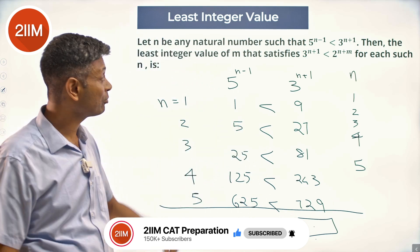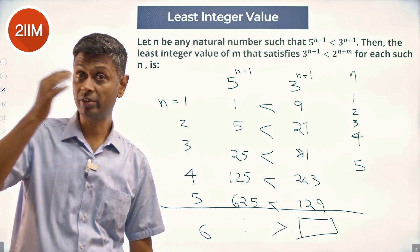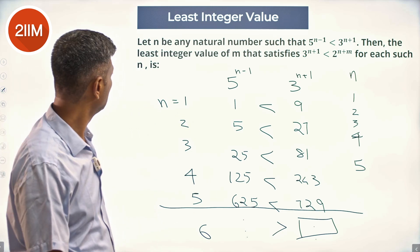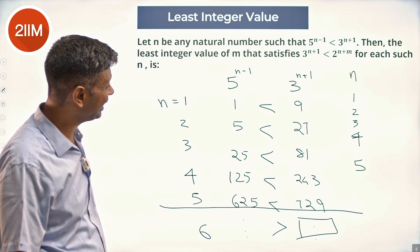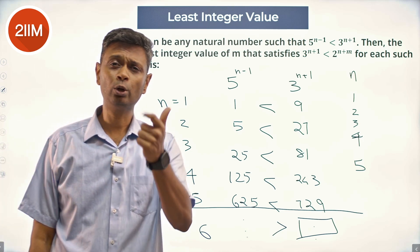From 6 onwards, 5^5 is greater than 3^7—this fellow overtakes. We know that 5^(n-1) < 3^(n+1), so n is 1, 2, 3, 4, or 5.